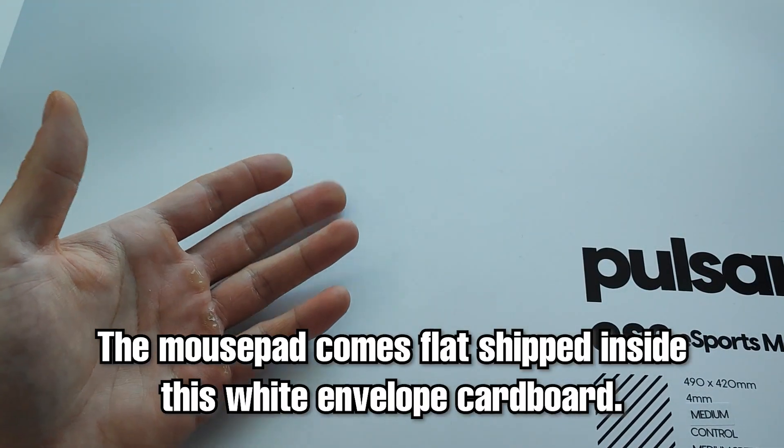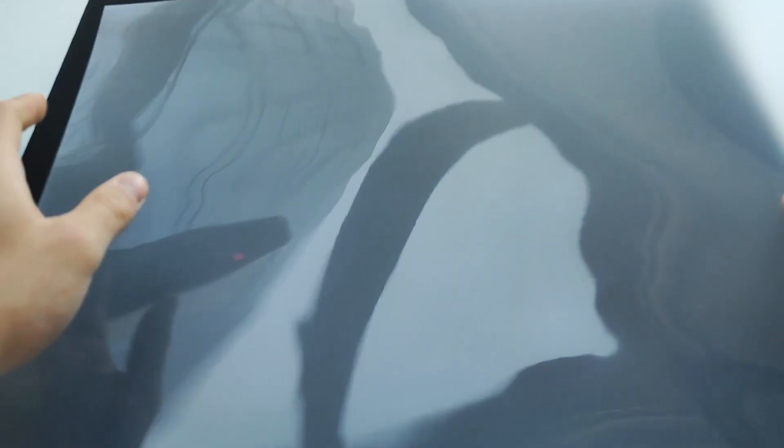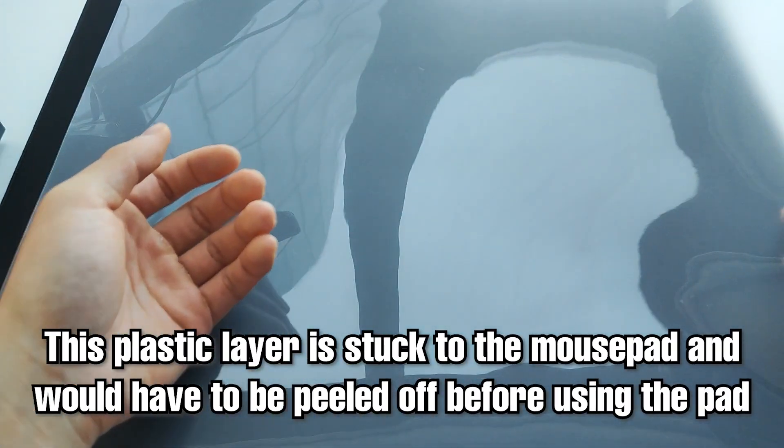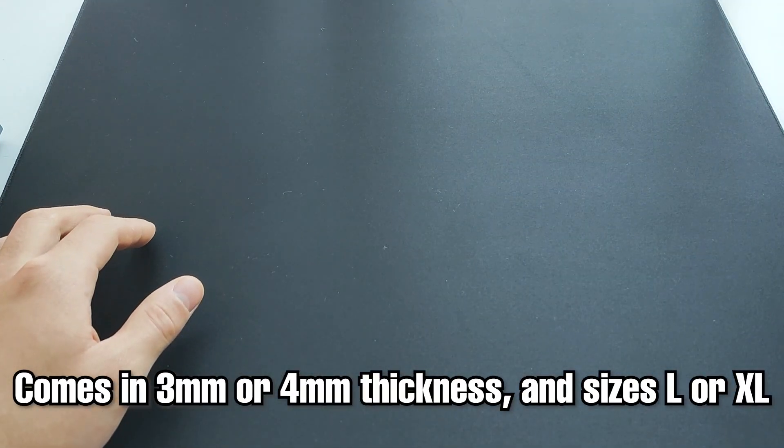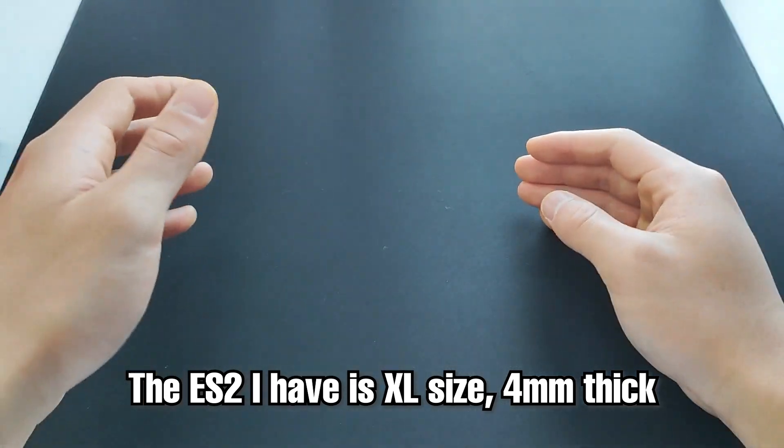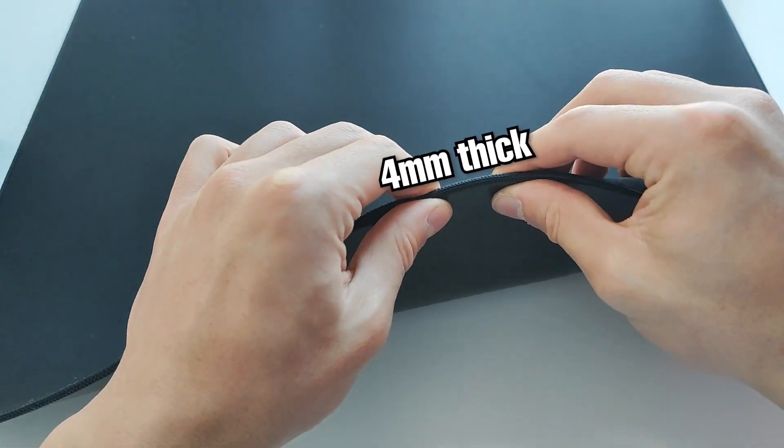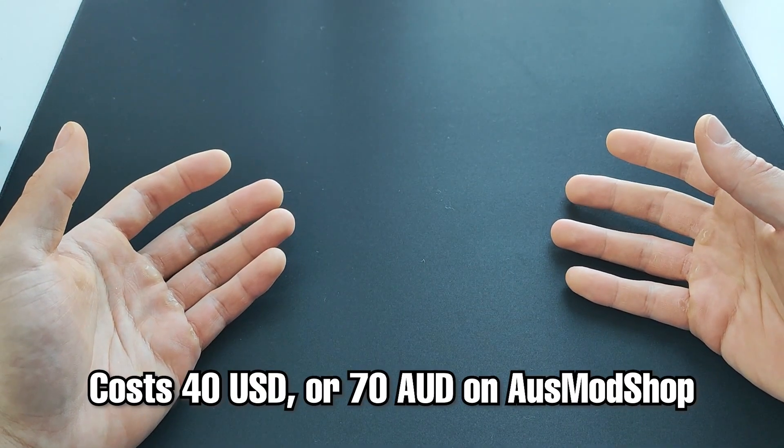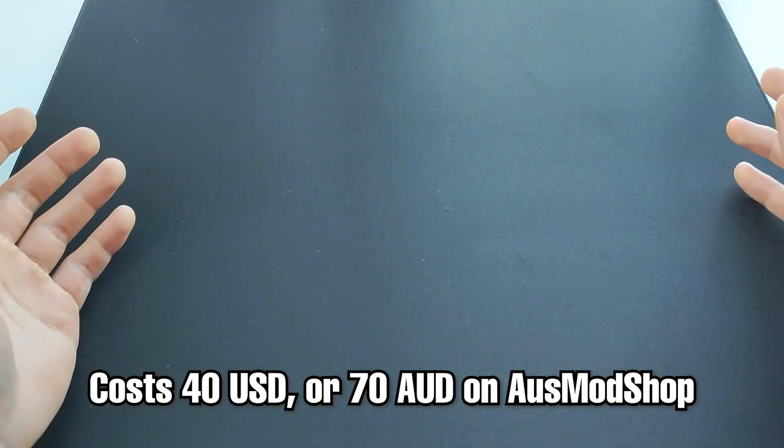So the ES2 comes flat shipped inside a cardboard envelope. Now this is the industry standard now. Inside the envelope, the pad would also be stuck onto this plastic layer, and you would have to peel the pad off. The pad is actually available in two sizes and two thickness variants. But here we have the XL 4mm thick, which measures in at 490 by 420 by 4mm thick. Now this version costs 40 US dollars, or if you're in Australia, it's available at Ausmodshop for 70 Australian dollars.